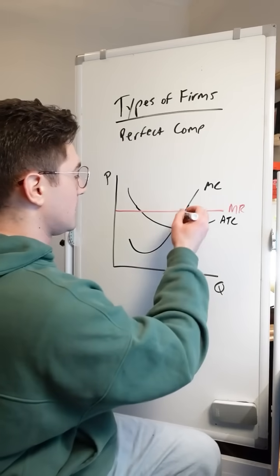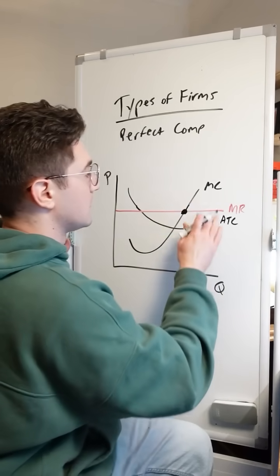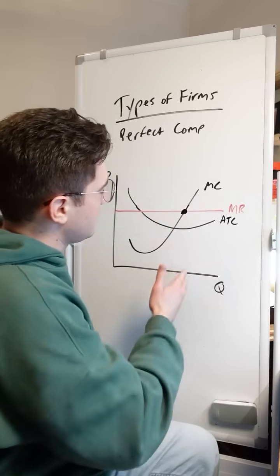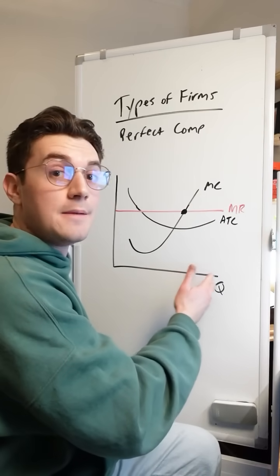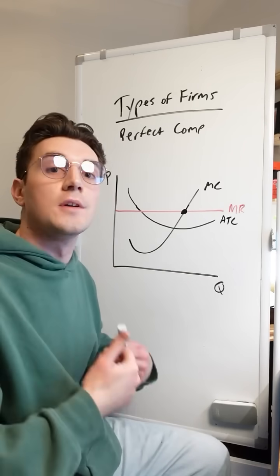The profit maximizing point is just going to occur at the intersection point right here of MC and MR. At this point right here, if they were to produce any more units, they'd be incurring a loss.